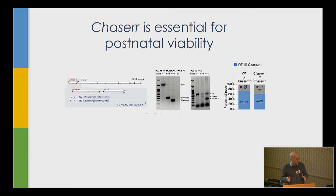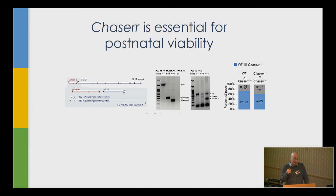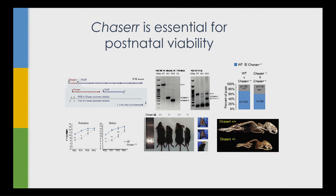We decided to generate a mouse knockout for the lncRNA upstream of CHD2, which we named Chaser, using CRISPR to excise the promoter — removing about 1 kb from the mouse gene. We were very interested to see that we could not get any homozygous animals. Chaser knockouts are embryonic lethal postnatally — we can recover embryos up to day 18.5, but postnatally they die. Heterozygous animals also consistently appear at less than 50% expected frequency, suggesting even heterozygotes often don't survive post-birth. Surviving animals have severe growth retardation and variable developmental defects.